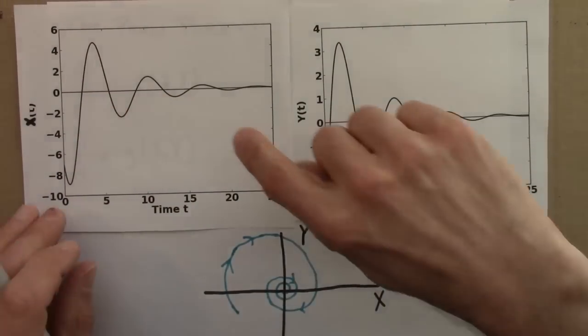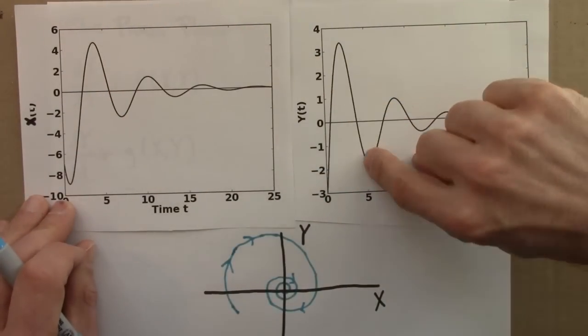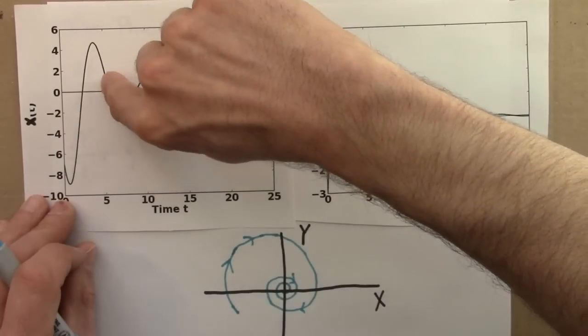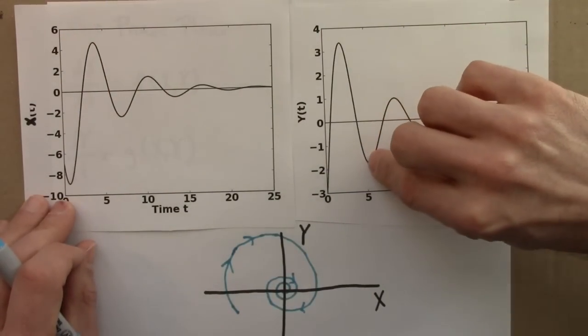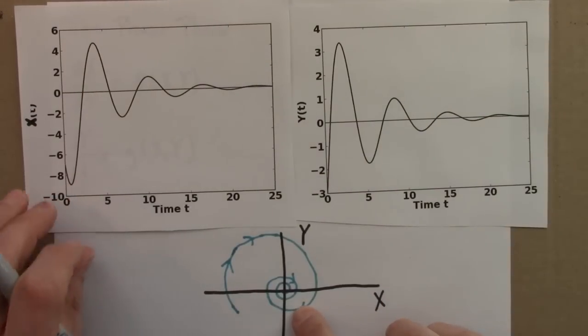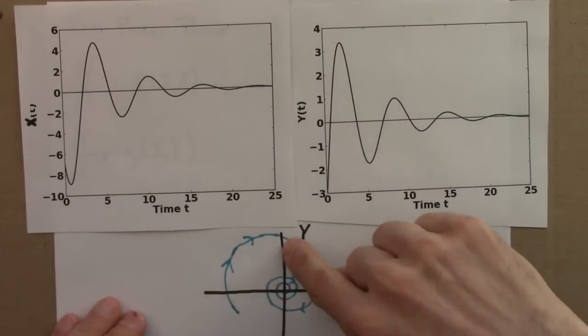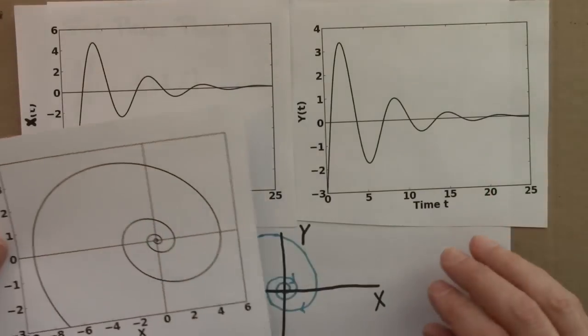Another thing you could do, you could sort of plot point by point. So at t equals 5, we have an x of around 4 and a y of around minus 1.5. So maybe that's over here. So anyway, this isn't designed to be exactly to scale but just give the general shape.